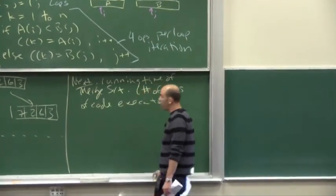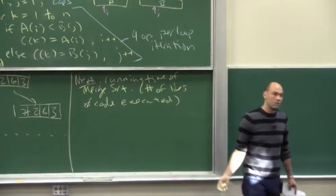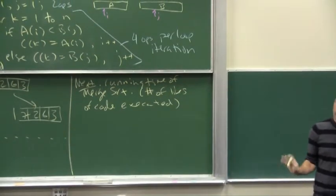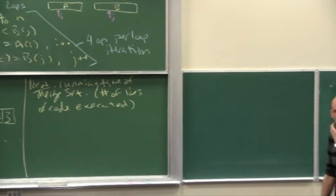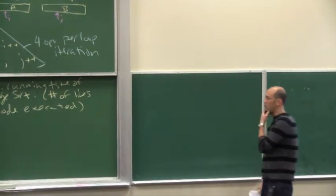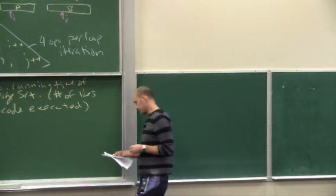And again, you could quibble and say, well, maybe the loop should really be two operations per iteration, both a comparison and an increment. We'll talk about it in a minute, why it doesn't make a big difference in the decisions you make in those kinds of things.